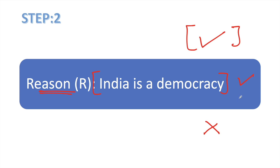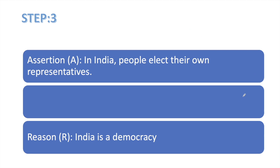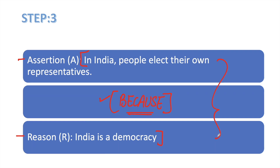Now comes our third part, जो की बहुत ज्यादा important है. Step 3 में हमें assertion और reason को interrelate करना है by adding a 'because' in between. We shall read these two statements with a 'because' in between: 'In India, people elect their own representatives because India is a democracy.' अब ये जो sentence because लगा के बना है, ये पूरा sentence क्या आपको सही लग रहा है? अगर सही लग रहा है तो टिक, अगर गलत तो क्रॉस. इस because की वजह से इन दोनों statements में inter-relation दिखाई दिया, so this is a correct statement — हमने इस पे भी टिक लगा दिया.